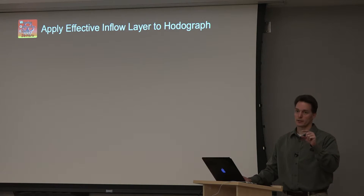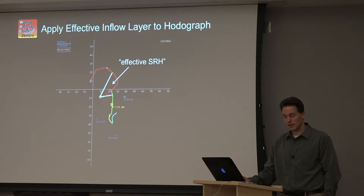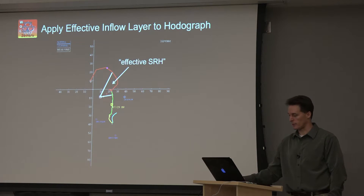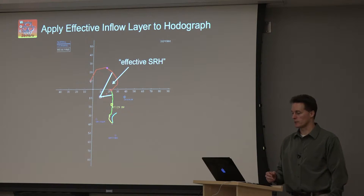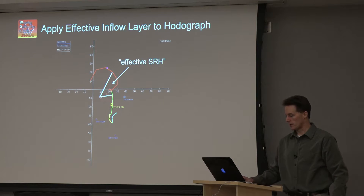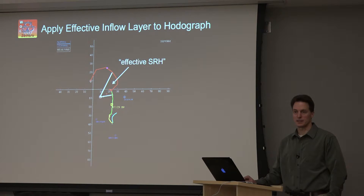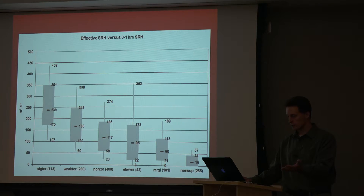Now we use that inflow layer depth to define the layer over which we're looking for vertical shear for the tilting and stretching of horizontal vorticity. Putting that on a hodograph, we take the inflow layer and plot the observed storm motion — the apex of the little triangle — which in this case is to the southeast. The inflow layer sweeps from about one kilometer up to just above three kilometers, so it's only the upper part of that red segment of the hodograph. The lowest part near the ground is too stable. We calculate the effective storm-relative helicity just in that layer that potentially has parcels considered storm inflow. We apply this to a whole bunch of cases with proximity soundings close in time and space to actual supercell events.